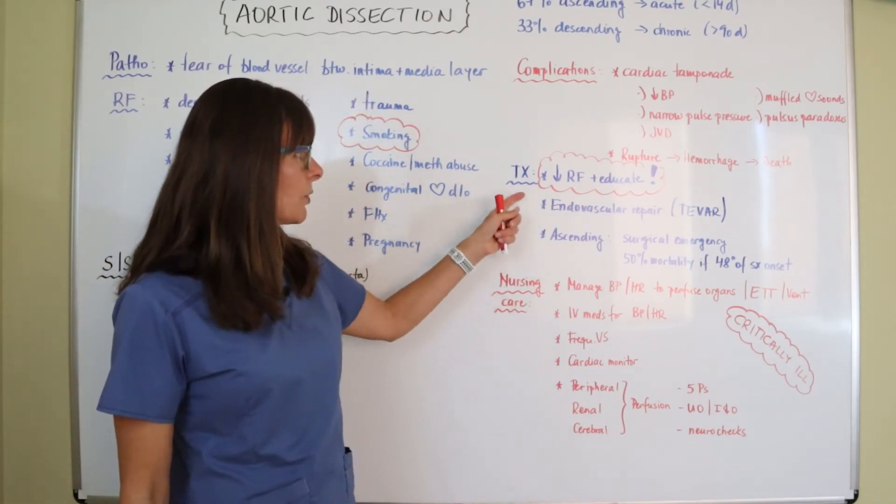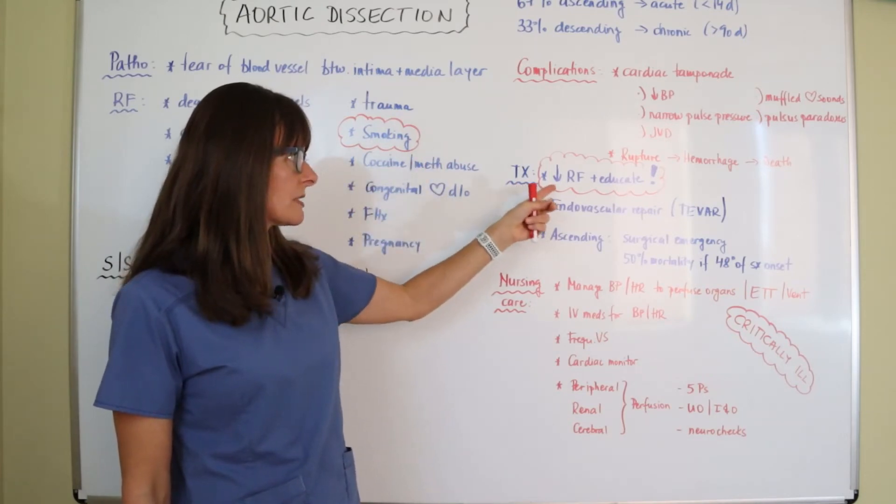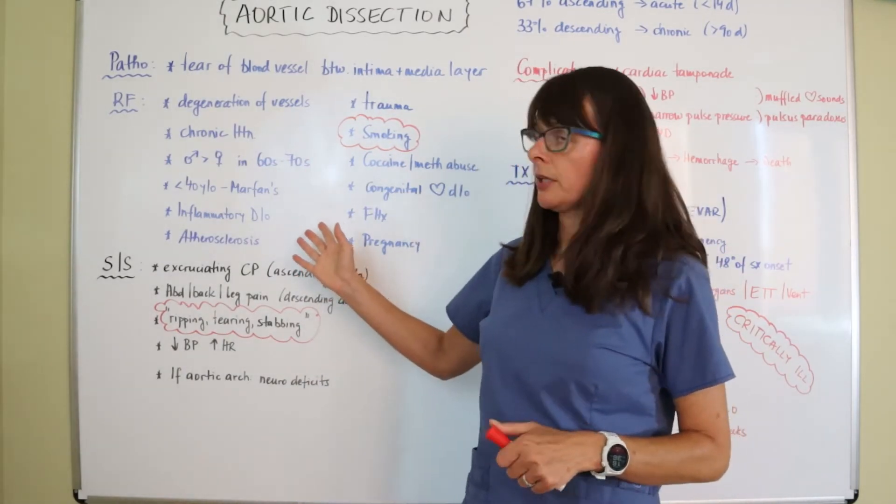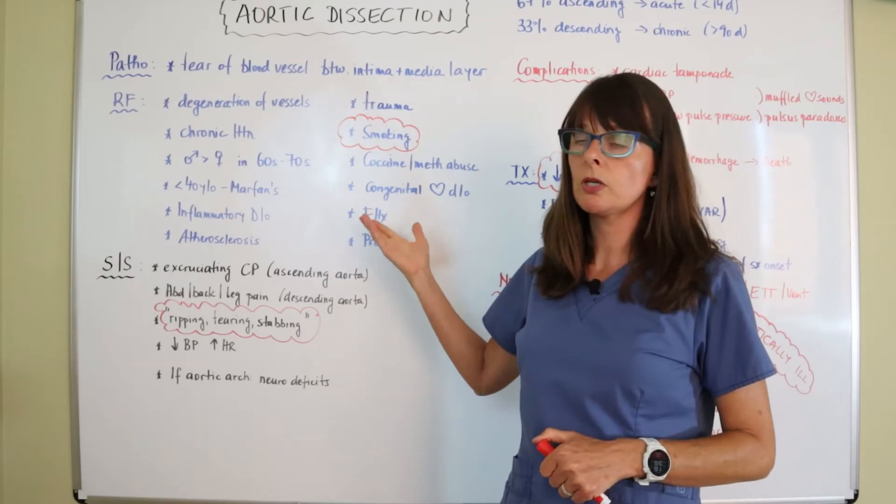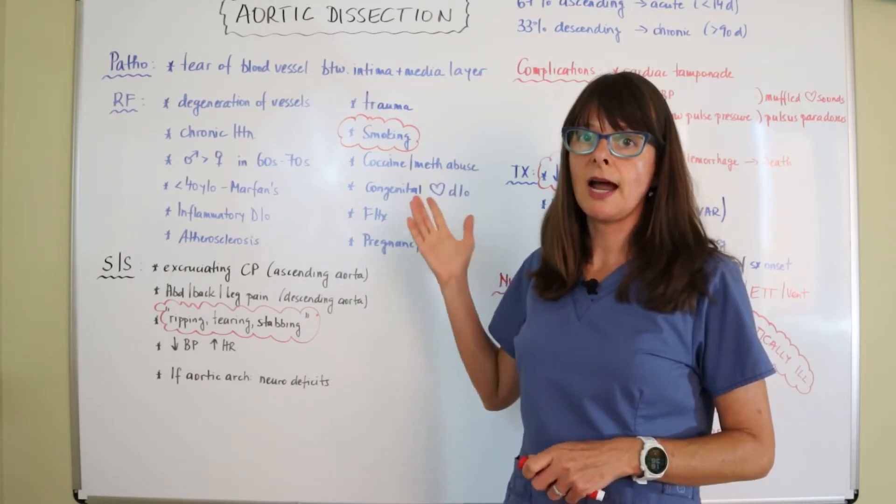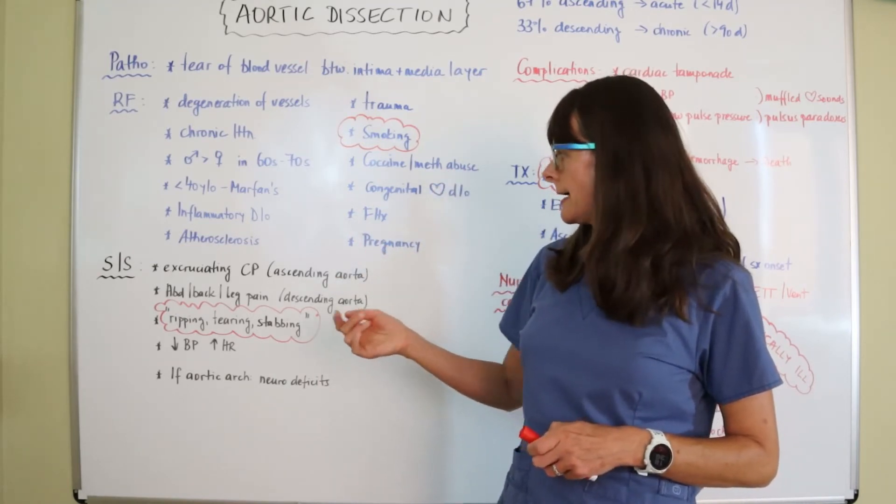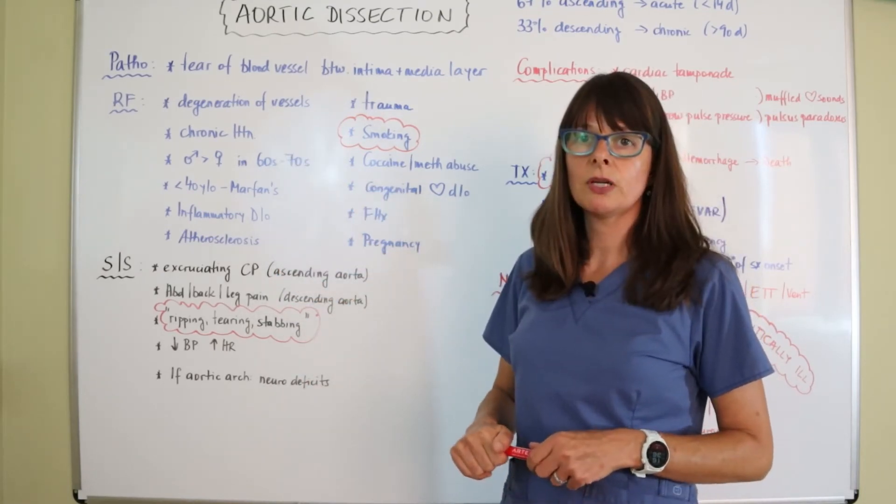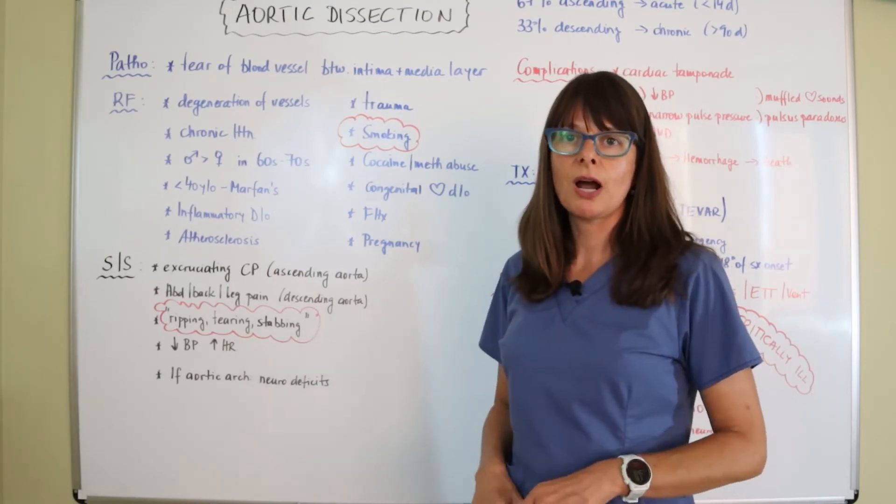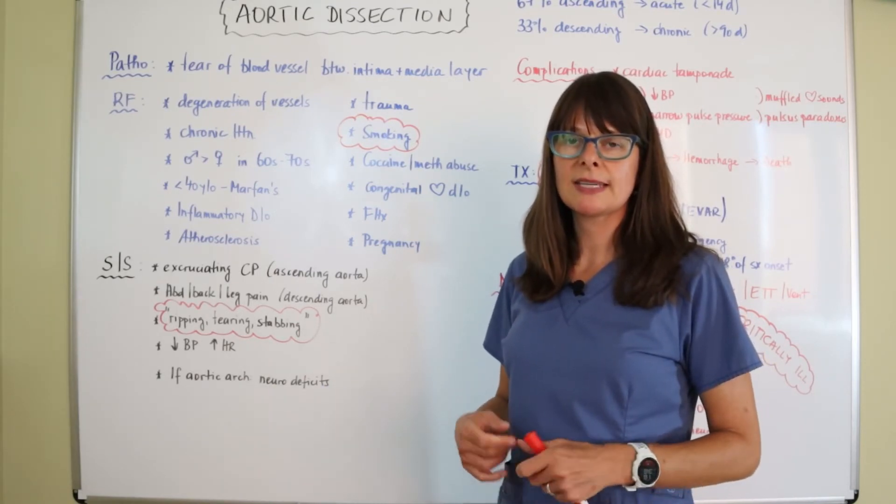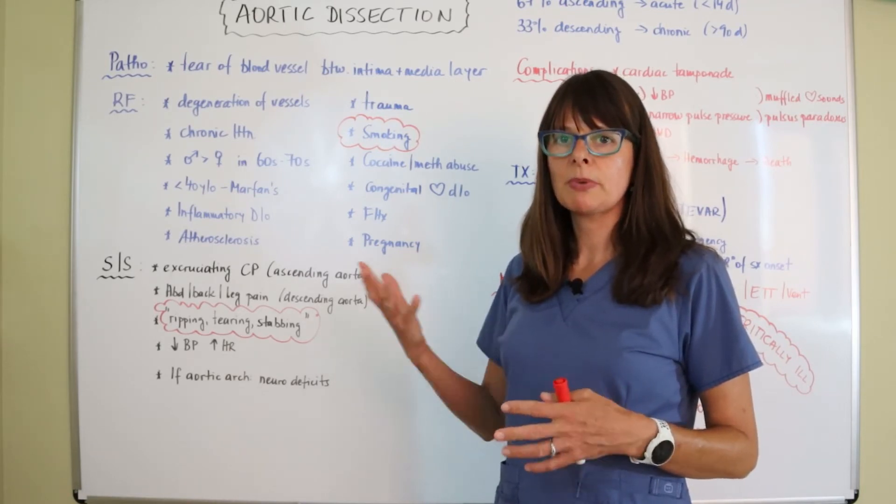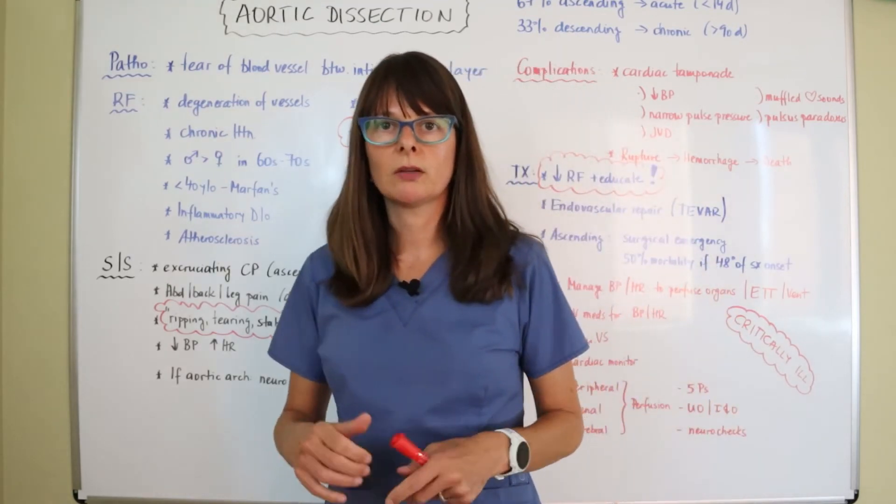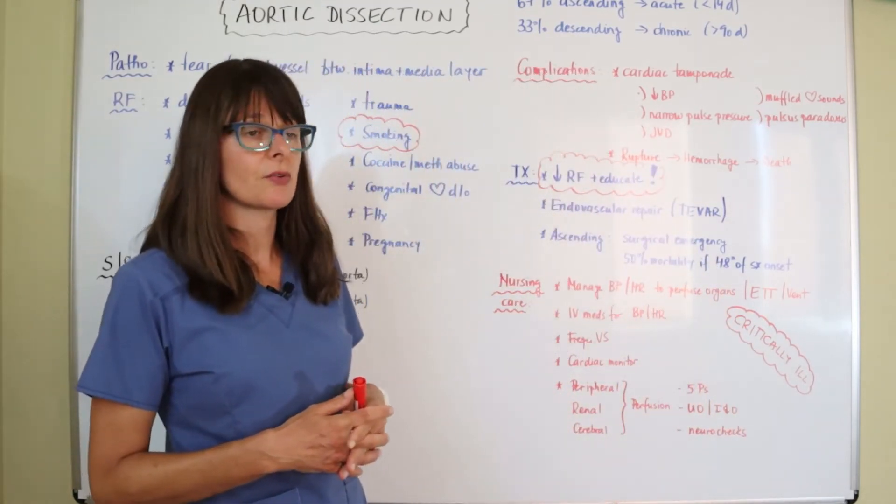So treatment for aortic dissection is to decrease the risk factors and educate our patients about all these things that we talked about here. So if they're a chronic smoker or a drug abuser, we need to inform them that this is a high likelihood that they might develop something like this as well as with atherosclerosis and chronic hypertension. These are some very easy targets for our education because these are certainly patients that we encounter almost on a daily basis and hopefully by educating them we can reduce the risk of developing this serious condition.